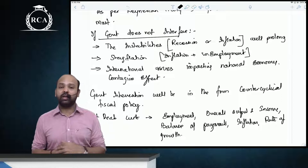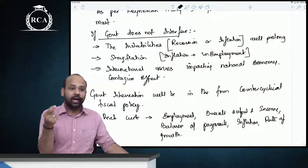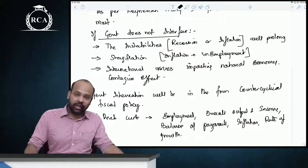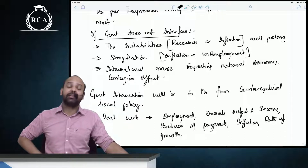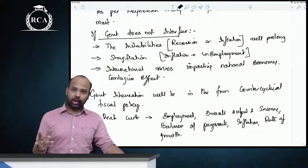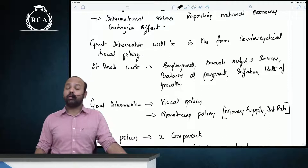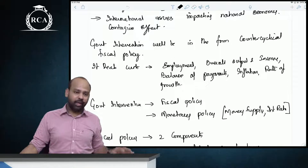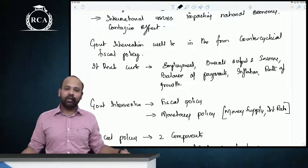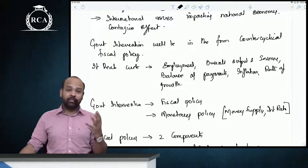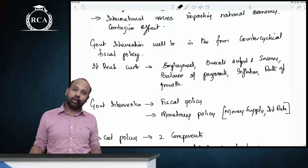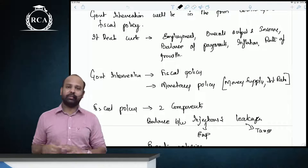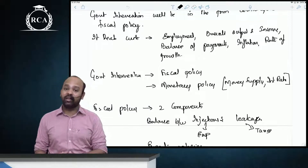If the government does not interfere, the inequalities, hardships, and instabilities will prolong and can result in stagflation or allow international disturbances to negatively impact the economy. Government intervention will be in the form of counter-cyclical fiscal policy. The government can interfere through fiscal policy or monetary policy — monetary policy by regulating the money supply and interest rates, and fiscal policy through balancing leakages and injections or specific policies addressed at specific sectors.